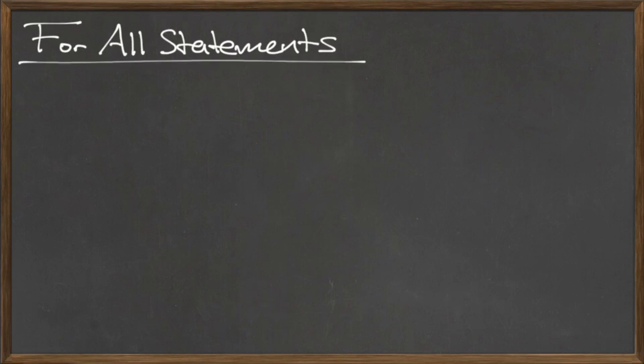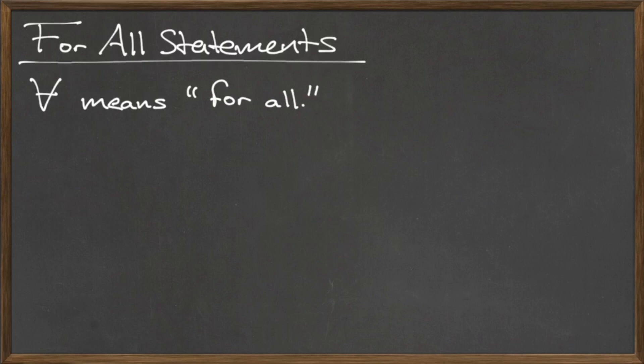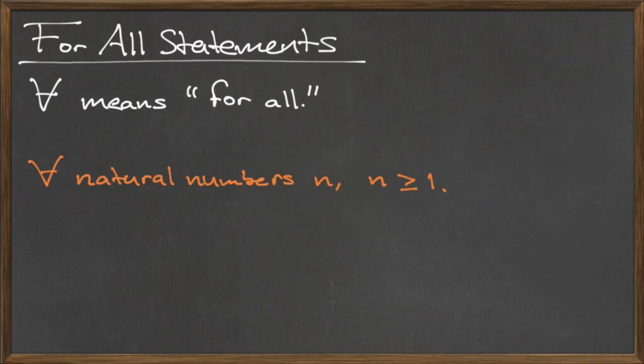Now let's use variables to introduce two new types of statements. The first is called a for all statement. A for all statement means that some rule or property holds for all numbers of a particular type. We sometimes use an upside-down capital A as a stand-in for the words 'for all.' Remember that the natural numbers are all of those integers that are bigger than zero. If we write that sentence using our for all statement, we can write: for all natural numbers n, n is greater than or equal to 1.